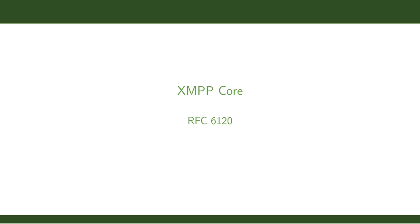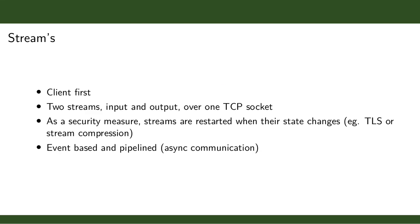Now let's talk about the core protocol defined in RFC 6120. XMPP is client-first — the client always initiates the connection. There are two streams, an input and an output, occurring over a single TCP socket for the client-to-server connection. As a security measure, streams are restarted whenever the stream state changes — for example, when upgrading from plain text to TLS or switching to a compressed connection. We throw out all previous state and start a new stream inside the new layer.